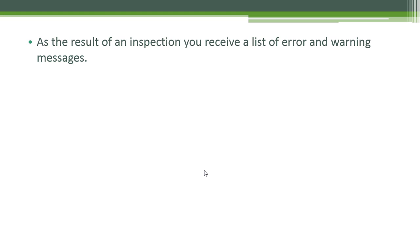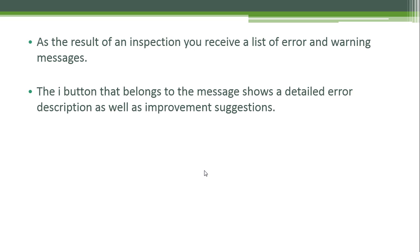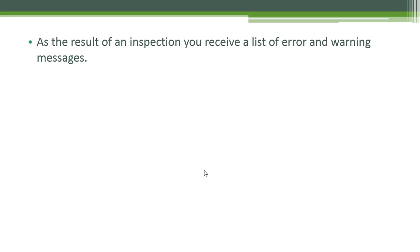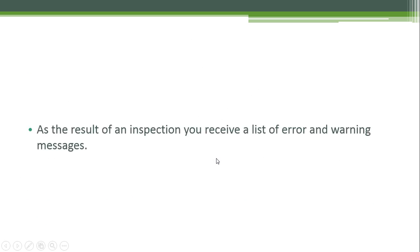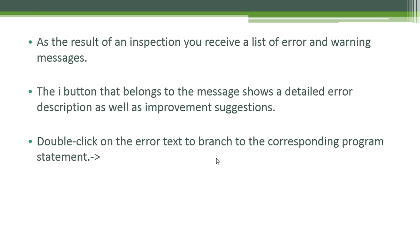As the result of an inspection, you receive a list of error and warning messages. The eye button that belongs to the messages shows a detailed error description as well as improvement suggestions. Whenever you click it, a screen will pop up showing you what you can do in the system to improve that message. Double-click on the error text to branch to the corresponding program statement.